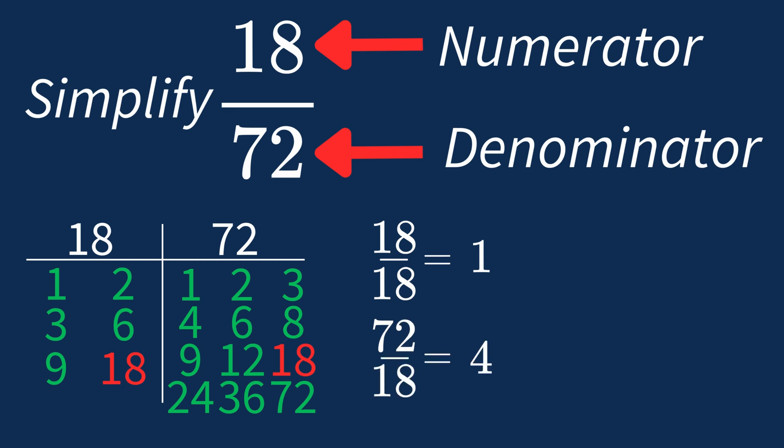So after dividing, the simplified fraction is 1 over 4. And we know that 1 over 4 is in its simplest form, because the only common factor between 1 and 4 is 1. And when 1 is the largest common factor, we know that our fraction has been simplified.